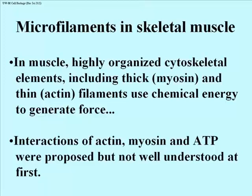Muscle is an example of highly organized cytoskeletal elements, which include not only actin, but the very much thicker filaments called myosin. Between the two of them — thick and thin filaments, or myosin and actin — these use the chemical energy of ATP hydrolysis to generate force. For a muscle to get shorter, that contraction is able to generate force to lift weight. We're going to look at the interactions of actin and myosin filaments, the thin and the thick filaments, and ATP.